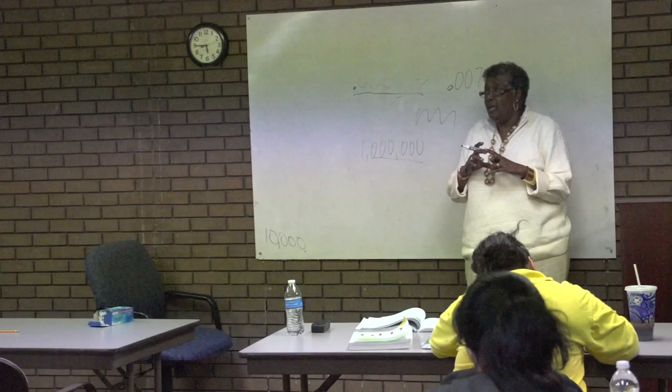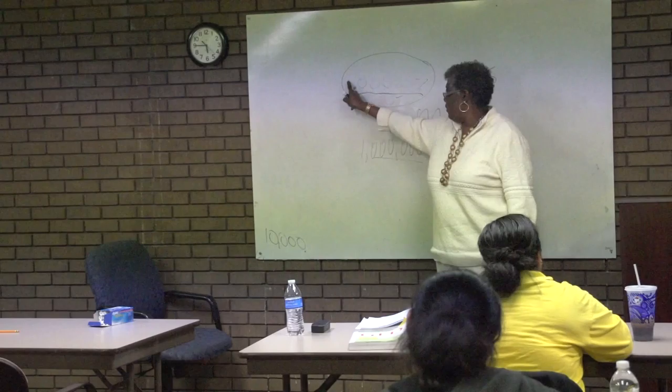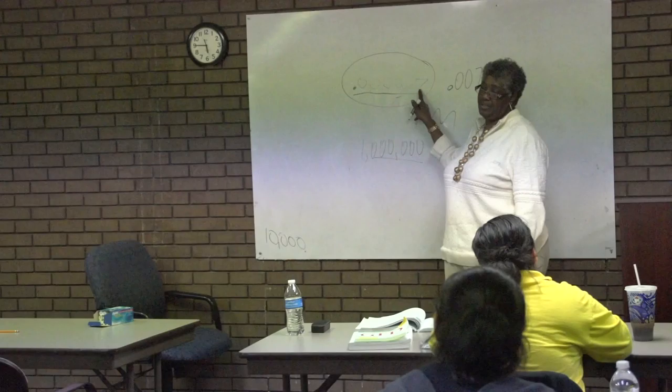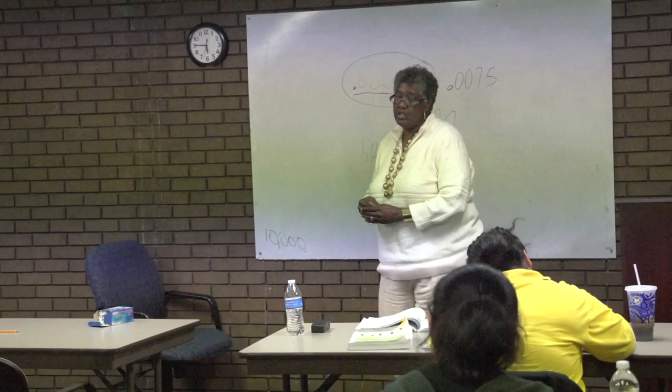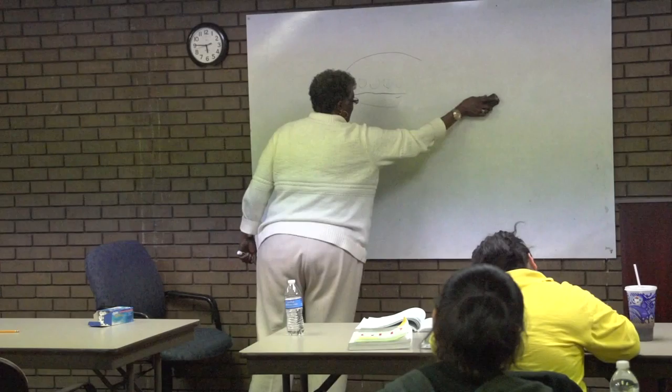It means it takes a million of these things to make one whole. One whole — it could be the whole universe. One whole doesn't have to be a little bitty thing. But what we know is that this whole was divided into a million pieces. It takes a million to make one, and all we have are 7 millions. And that's how you would write it. So when you add or subtract decimals, keep the decimal point lined up so that they are in the correct place.